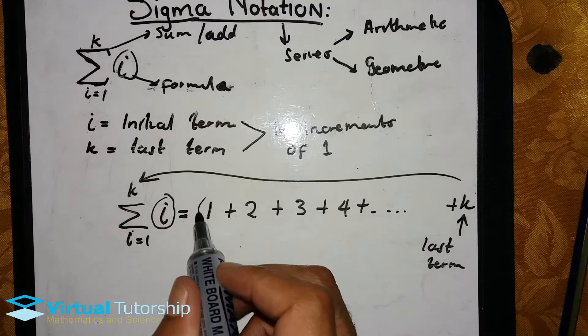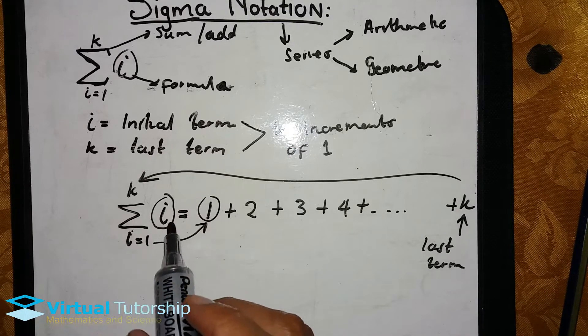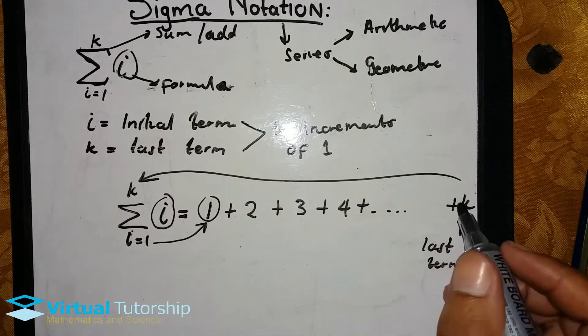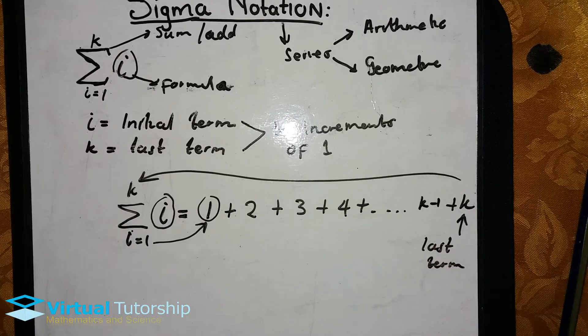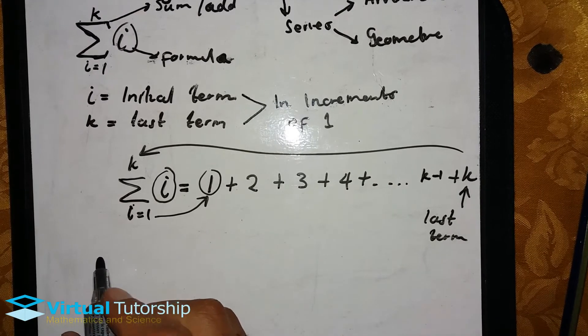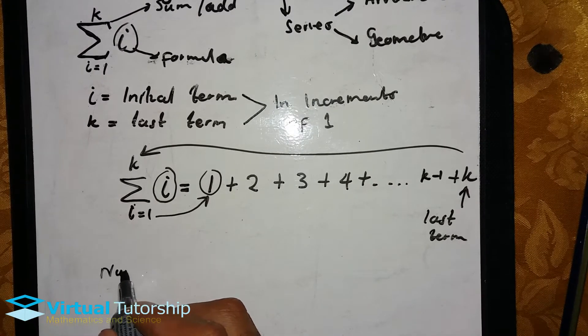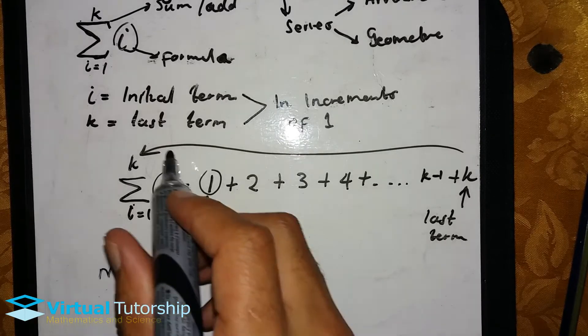The last term—you substitute this value. The first term you substitute is this initial term. The value before k is k minus one. This should make more sense now. This is my example to explain the basic concept behind this Sigma notation.